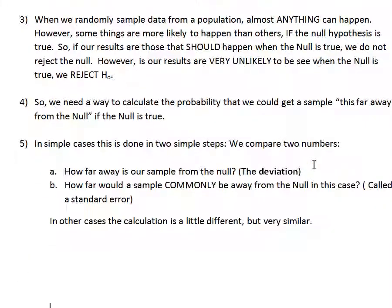When we randomly sample data from a population, almost anything can happen. However, what we rely on in hypothesis testing is that some things are more likely to happen than others. So if the null hypothesis is true, we can predict that some things are more likely to occur. For example, if the average IQ really is 100, and I take a sample and average their IQs, I should get something relatively close to 100. We can mathematically calculate exactly how likely it is to get different sample results.